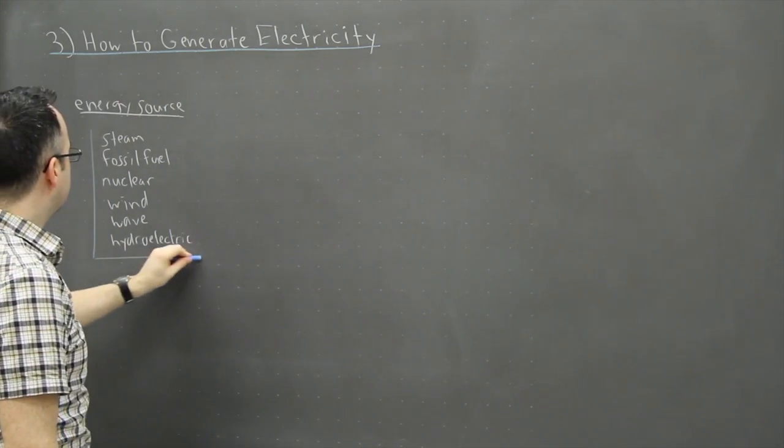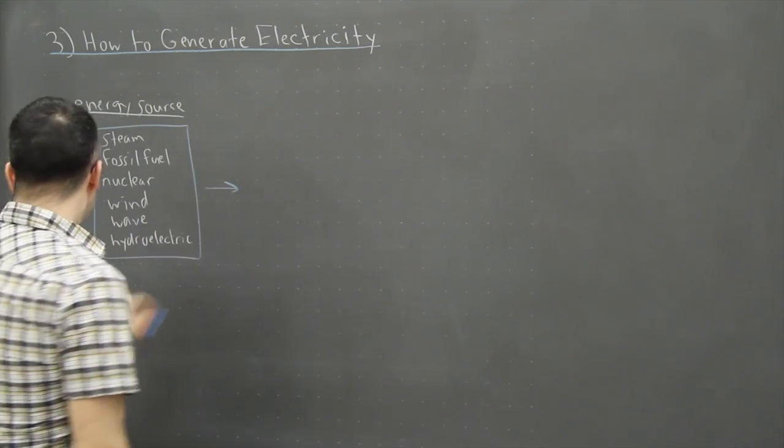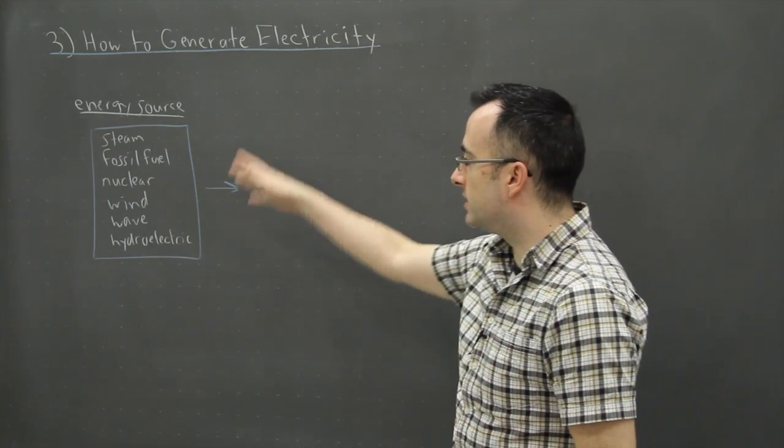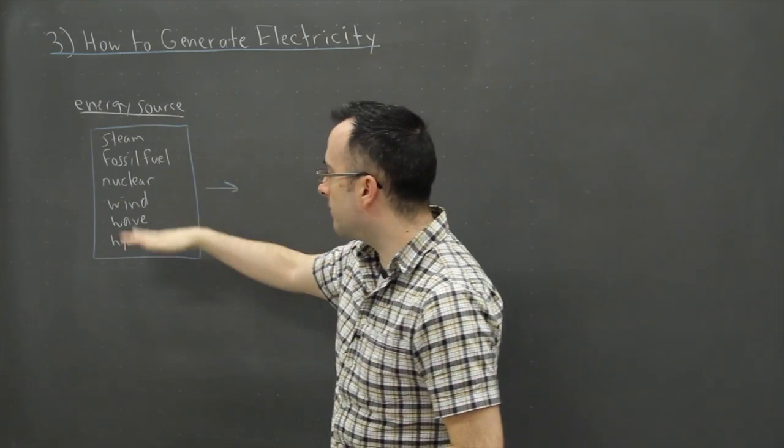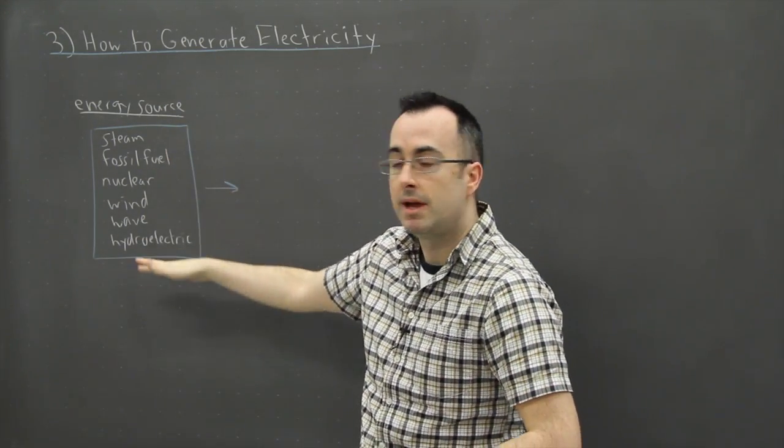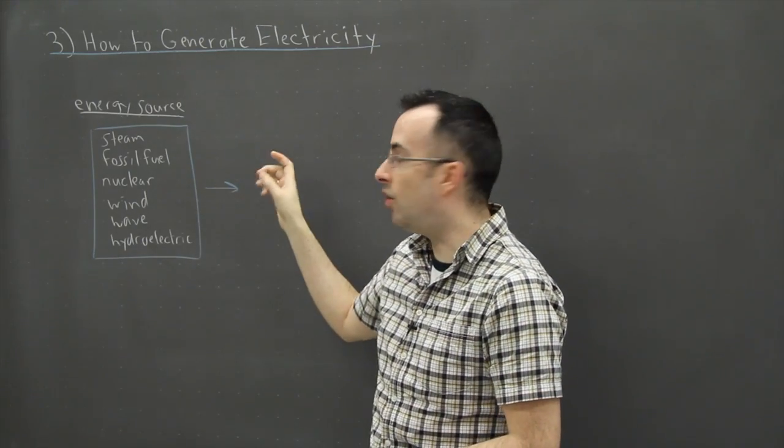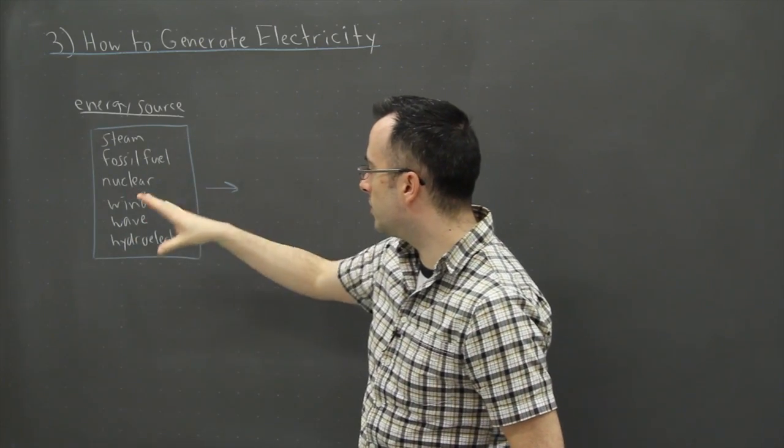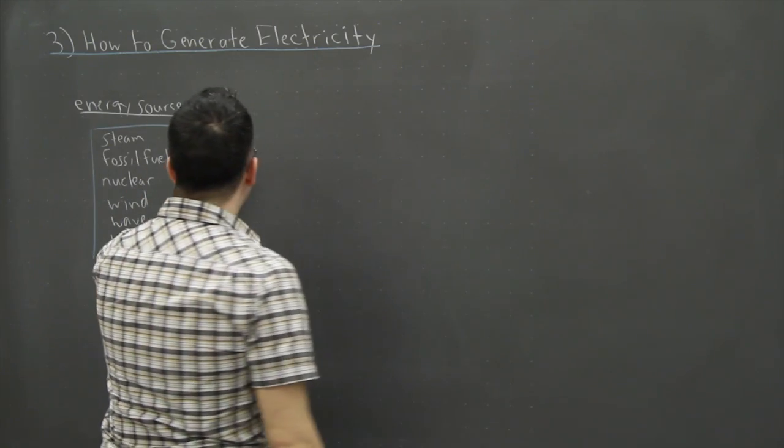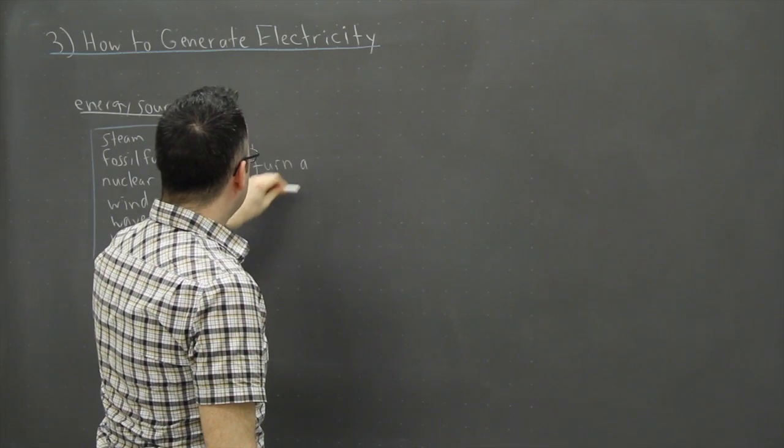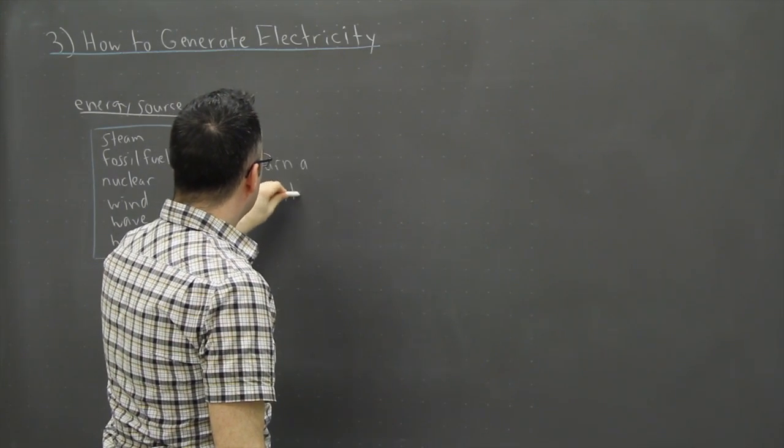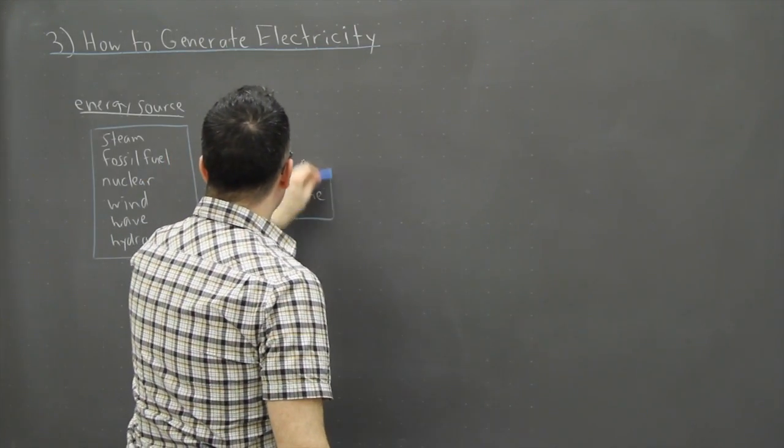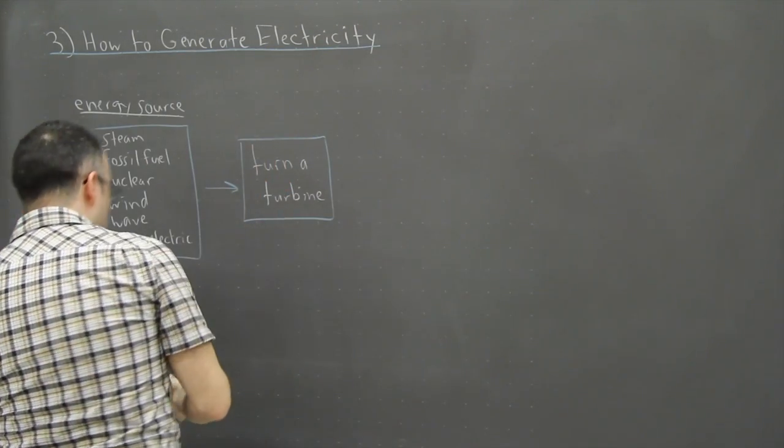Basically we have some sort of energy source - that's the key thing. We may have different ways of doing this part, but the end part is really cool because they all do essentially the same thing. We take some energy and we turn a turbine. That's the key thing - we're using this energy to turn a wheel.